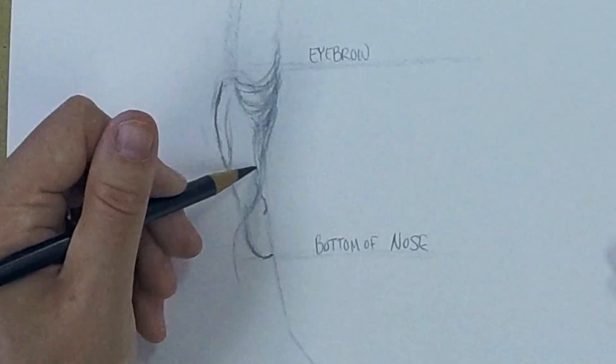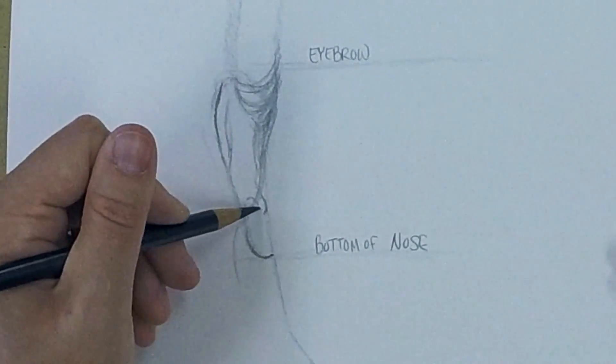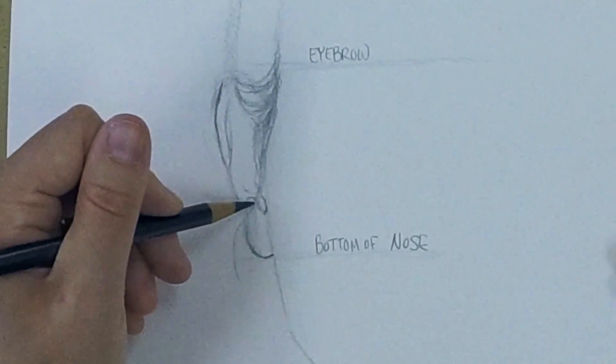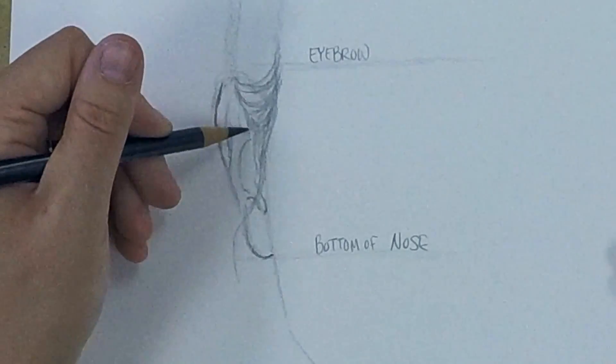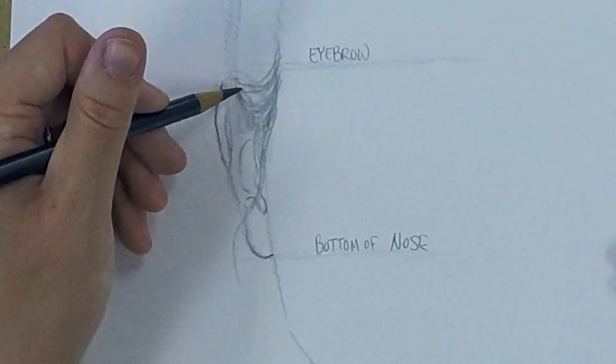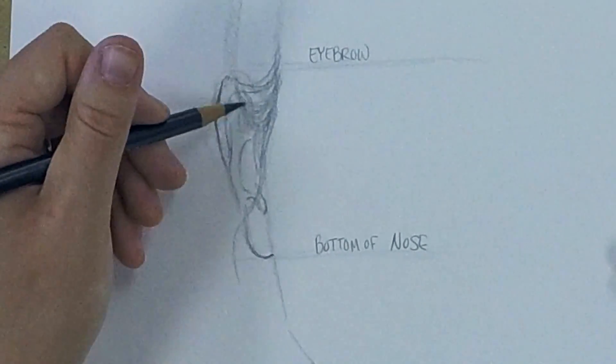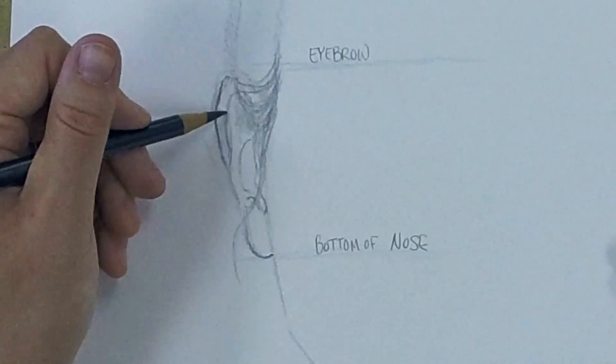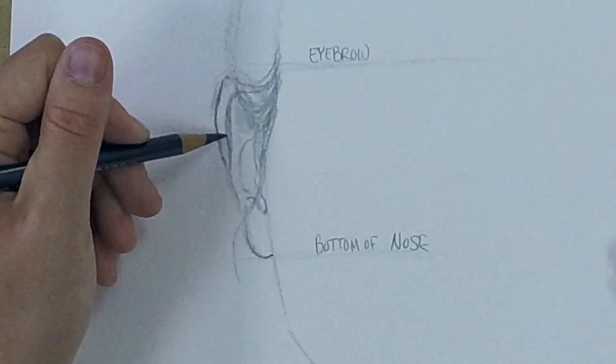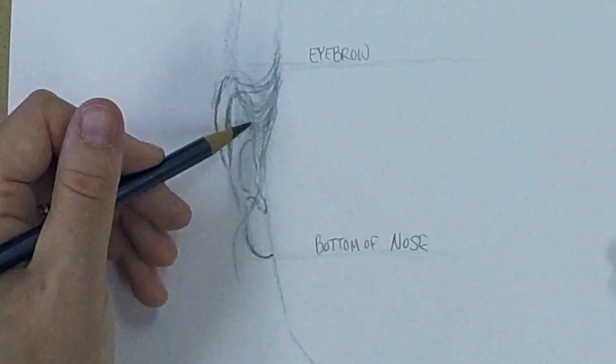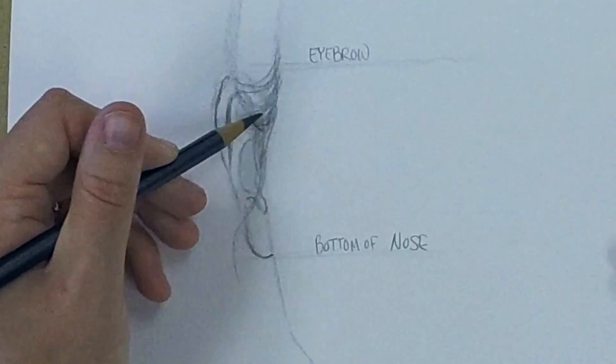We have the tragus, which is that little triangular piece that juts out, and then another curve to your anti-tragus. Then up at the top we have a little indent of the cartilage and then it pokes out a little bit right about there.